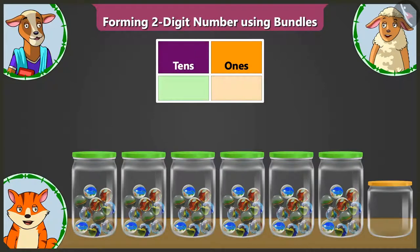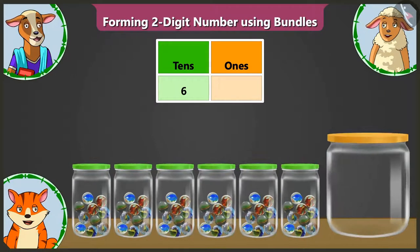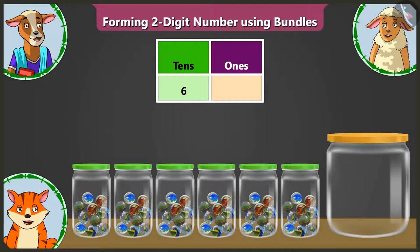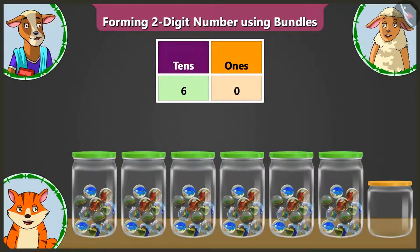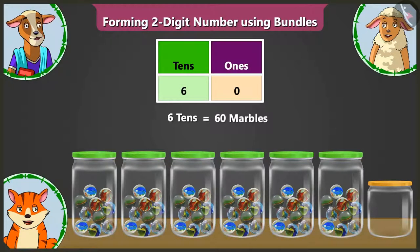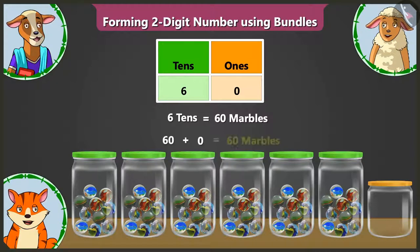This is why we will write six in the tens box. Now, Lily, how many marbles are there in the seventh jar? The seventh jar is empty — there is not even one marble. So we have to write zero in the ones box. We have six in the tens box, which means sixty, and zero in the ones box. So there are sixty marbles in total.